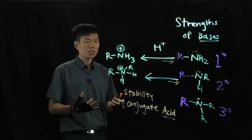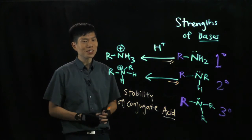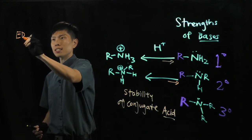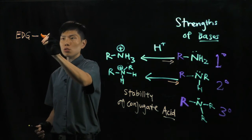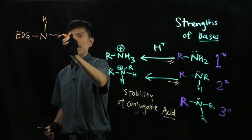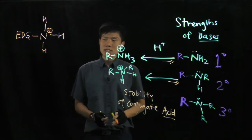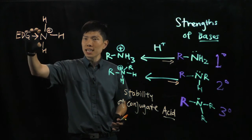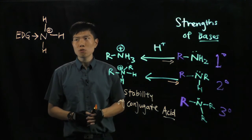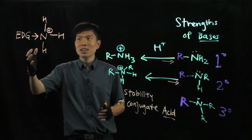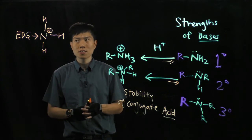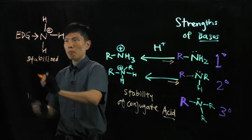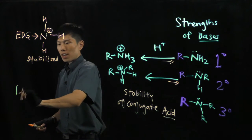Somehow there must be a driving force that can increase the stability of this conjugate acid. It is the nature of the R group. Suppose we have R groups that are electron donating. EDG will push electron density towards the nitrogen, which means it will give more electrons and suppress the positive charge on the nitrogen, making it more stable. Because now the positive charge on the electronegative nitrogen is lower, this conjugate acid is stabilized.